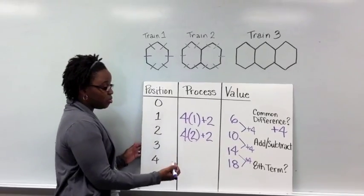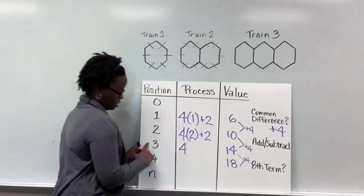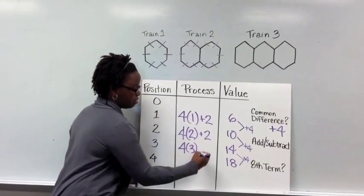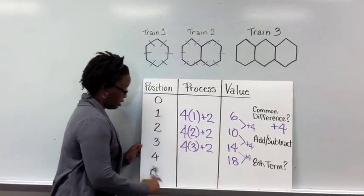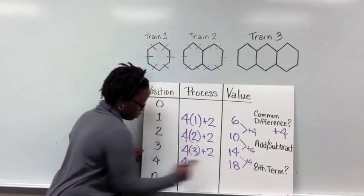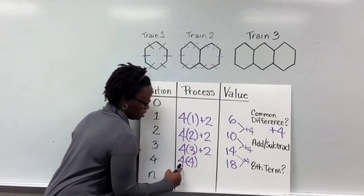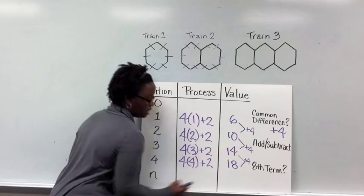And this can continue on for any number. So here my common difference is 4 times the position of 3. Well that's only 12. I need to add 2 more to get to 14. I can do the same thing for 4. So my common difference of 4 times the position of 4 is 16. I need to add 2 more to get to 18.